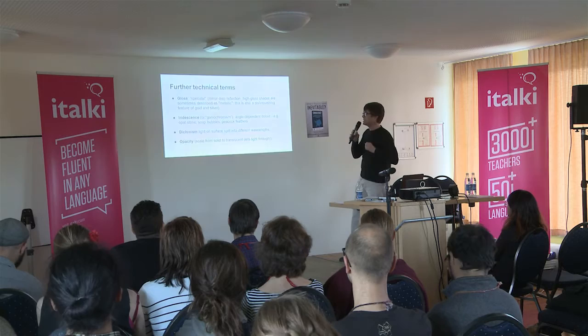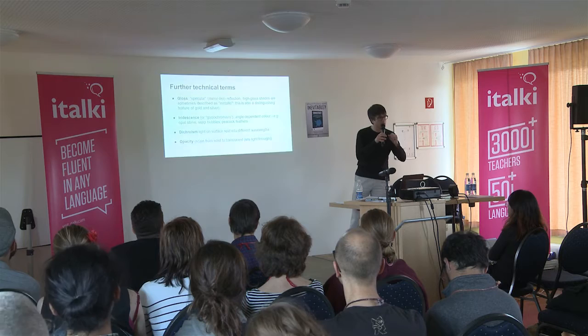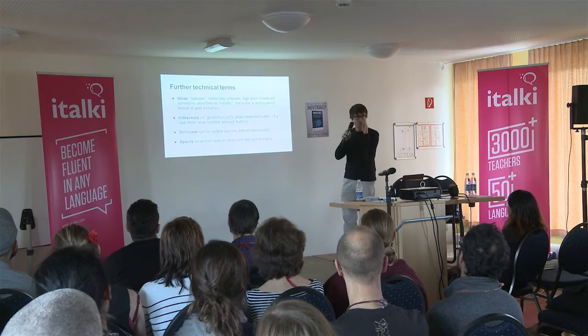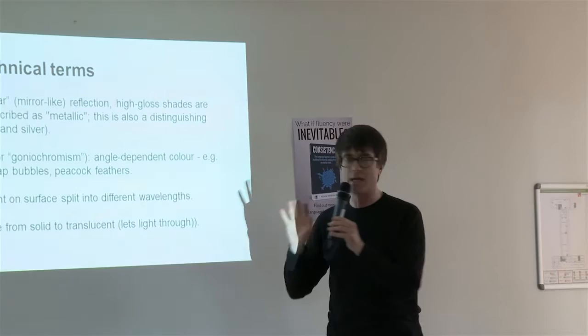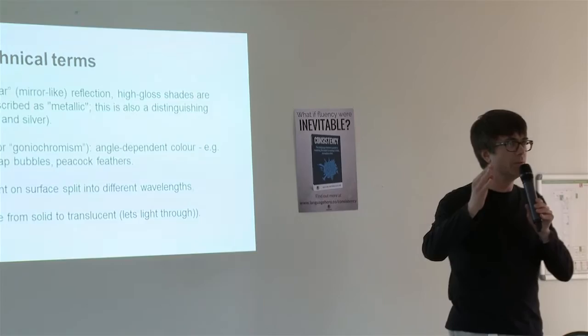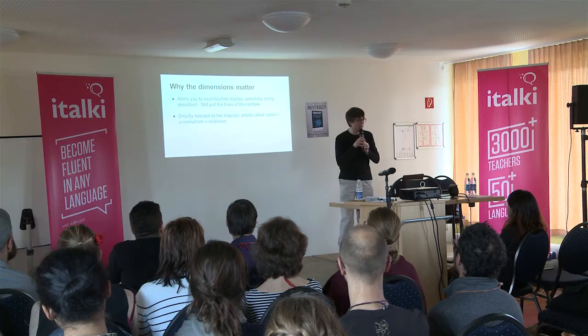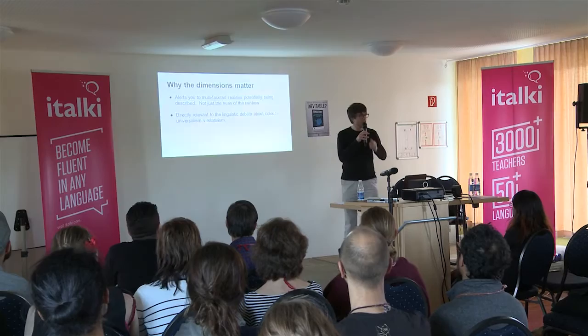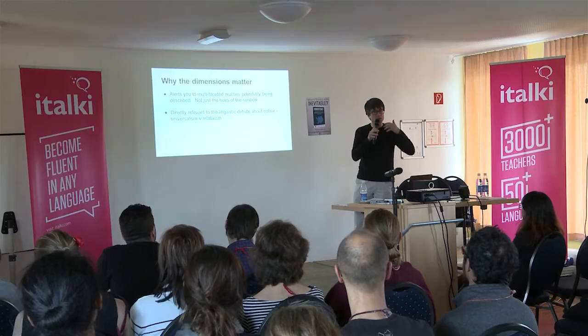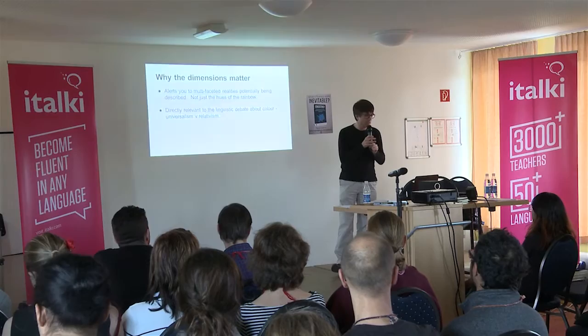There are further technical terms: gloss — how shiny an object is; iridescence — which is angle-dependent, that idea of reacting to the surface, like bubbles in a bath or a pearl seeming to reflect different colors; dichroism; and opacity — how much light is let through. So it's not just the colors of the rainbow but the saturation, lightness and darkness, intensity, and the nature of the surface itself. This alerts you to the multifaceted reality you're describing when talking about color, which becomes important when looking at how different cultures have used color terms throughout the globe.